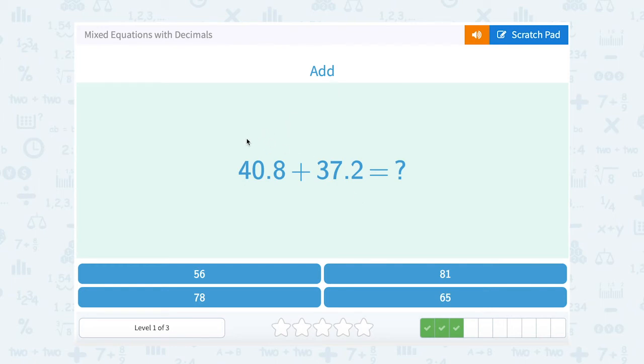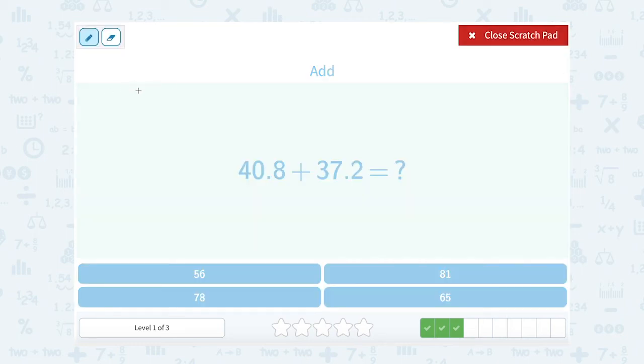We want to add 40.8 plus 37.2. When we're adding, we like to line them up. So we're going to say 40.8 plus 37.2, and then I'm also going to line up the decimal point in my answer.